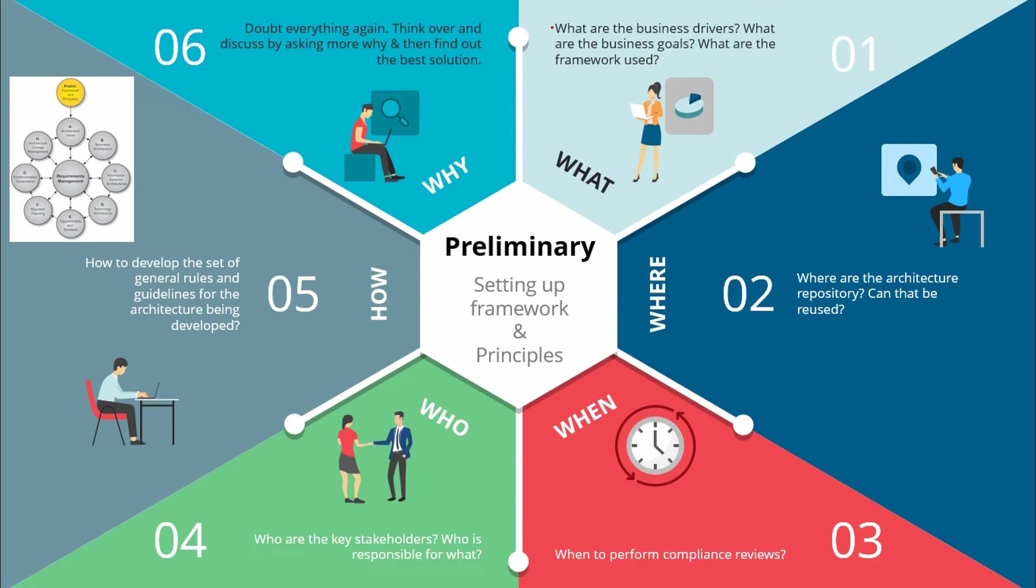The main aspects to think are: point one, what are the business drivers, what are the business goals, what are the frameworks used. Point two, where are the architecture repository, can that be reused. Point three, when to perform compliance reviews. Point four, who are the key stakeholders, who is responsible for what. Point five, how to develop the set of general rules and guidelines for the architecture being developed. Point six, doubt everything again, think over and discuss by asking more why, and then find out the best solution.